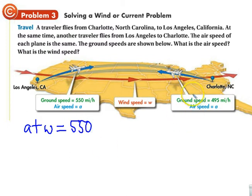But this plane is being hurt by the wind. Its ground speed is 495. So we take its airspeed minus the headwind, and we get 495. So those are the two equations. This one representing the trip from L.A. to Charlotte, this one representing Charlotte to L.A.